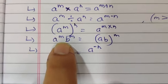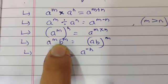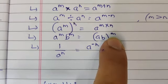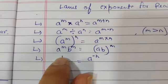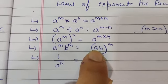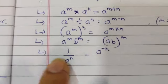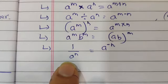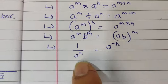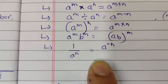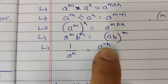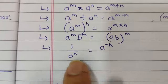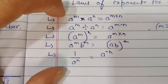The next law is A to the power M multiplied by B to the power M. We can convert it into inverse form: 1 over A to the power N can be written as A to the power minus N. When it comes to the numerator, the sign of the power changes — if the power is positive, it becomes negative. So A to the power minus N is the reciprocal form. These are all the laws of exponents.